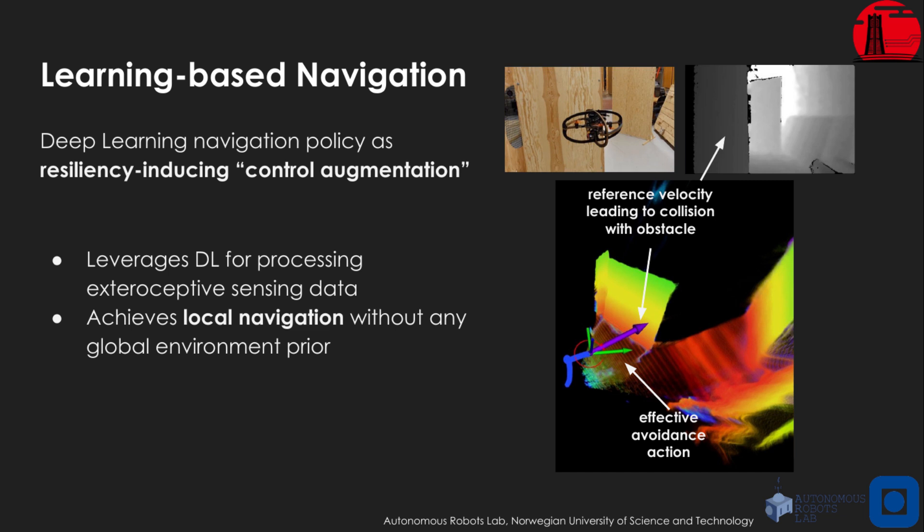As you can see in the scenario snapshot on the right, the nominal policy, depicted as the purple arrow, would send the drone into collision with an obstacle. But this obstacle is visible from the depth camera. Therefore, the policy generates an avoidance maneuver.